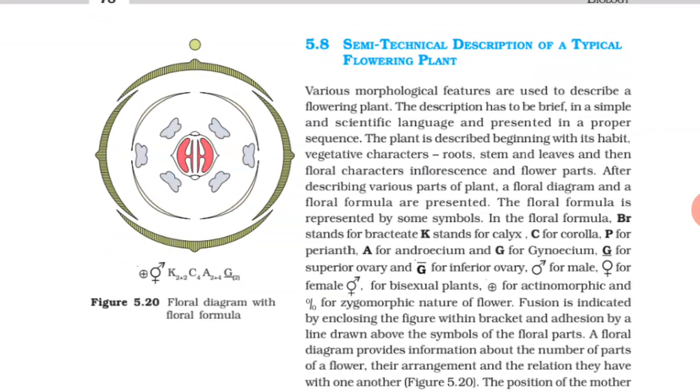Semi-technical description of a typical flowering plant. Various morphological features are used to describe flowering plants. The description has to be brief in a simple and scientific language and presented in proper sequence. The plant is described beginning with its habit, vegetative characters - roots, stem and leaves - and then floral characters, inflorescence and flower parts. After describing various parts of plants, a floral diagram and a floral formula are presented.